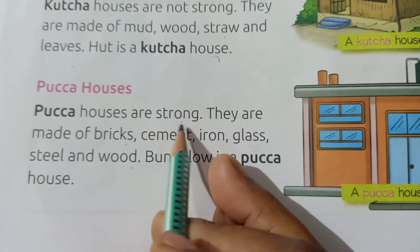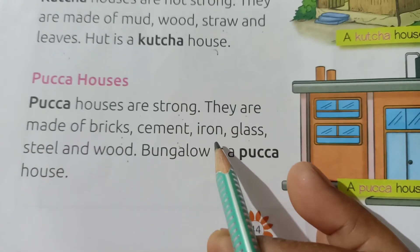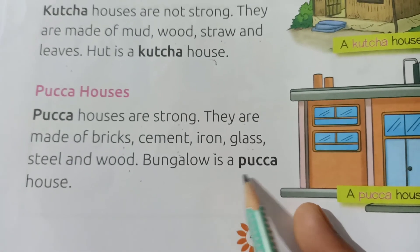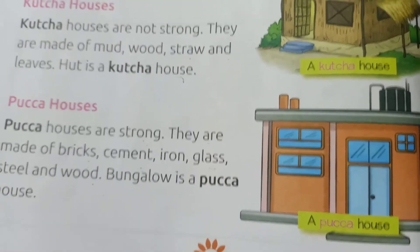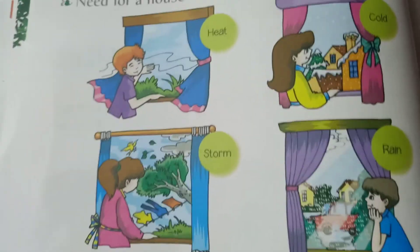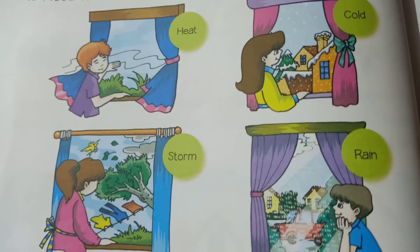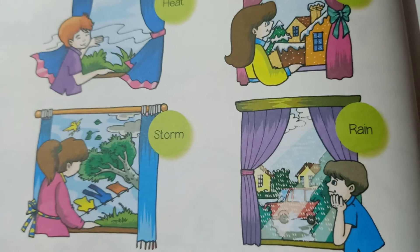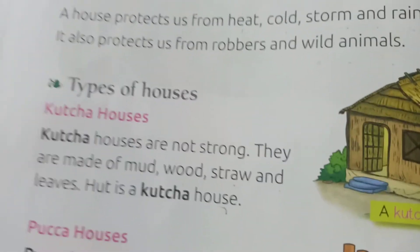Next are paccha houses. Paccha houses are strong. They are made of bricks, cement, iron, glass, steel and wood. A bungalow is a paccha house. Such a house is made of brick, steel and cement. We find paccha houses in cities — bungalows and flats in apartment blocks are paccha houses.